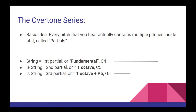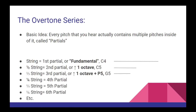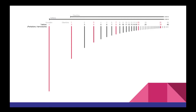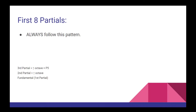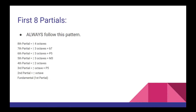To find more partials, you simply keep dividing the string by the partial number. The fourth partial is played on a string one-fourth the length of the fundamental, the fifth on one-fifth, the sixth on one-sixth, and so on. This pattern continues into registers so high that humans can't hear them, but for our purposes we only need to concern ourselves with the first eight. No matter what pitch you start with, each partial follows the same pattern: the second is an octave higher, the third an octave and a perfect fifth, the fourth two octaves, the fifth three octaves and a major third, the sixth three octaves and a perfect fifth, the seventh three octaves and a minor seventh, and the eighth four octaves higher.